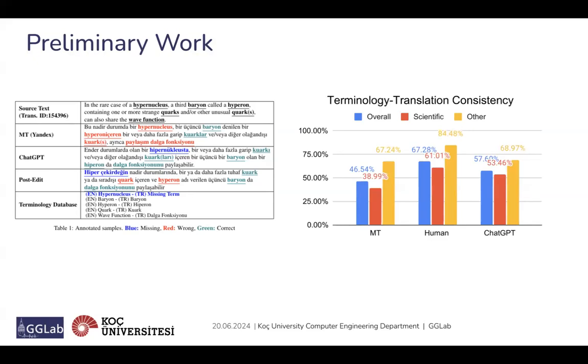The chart on the right illustrates the terminology translation consistency across different methods. We evaluated the overall accuracy as well as accuracy in scientific and other contexts. As shown, human translations performed best, followed by ChatGPT and machine translation engines. This reinforces our observation that current tools struggle with accurately translating scientific terms, highlighting the need for improved terminology-aware translation methods. In summary, our preliminary work underscores the importance of accurate translation for scientific content and the need for a systematic approach to integrating expert terminology into translation tools.